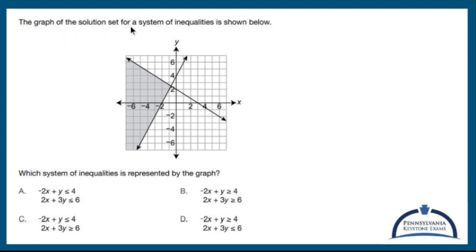The graph of the solution set for a system of inequalities is shown below. All right, so we've got two lines, double shading going on. Let's see what I noticed right off the bat. We're dealing with less than or equal to or greater than or equal to, no dashed lines here. We have this shading here.